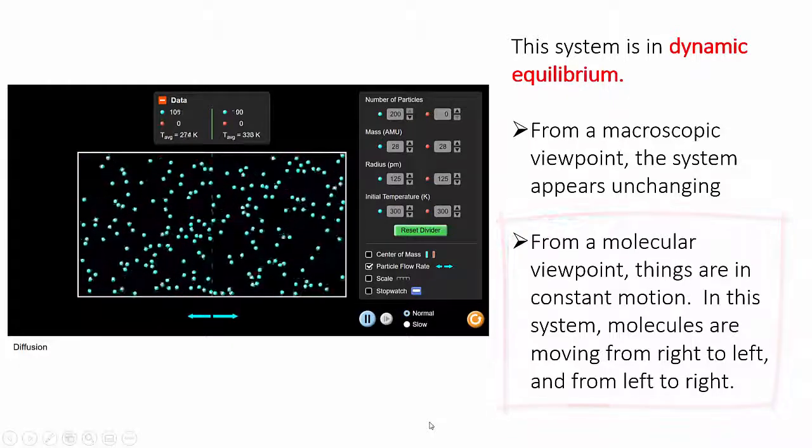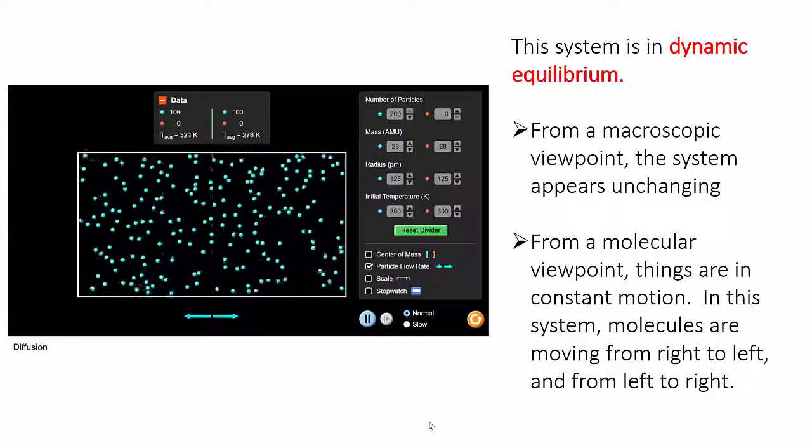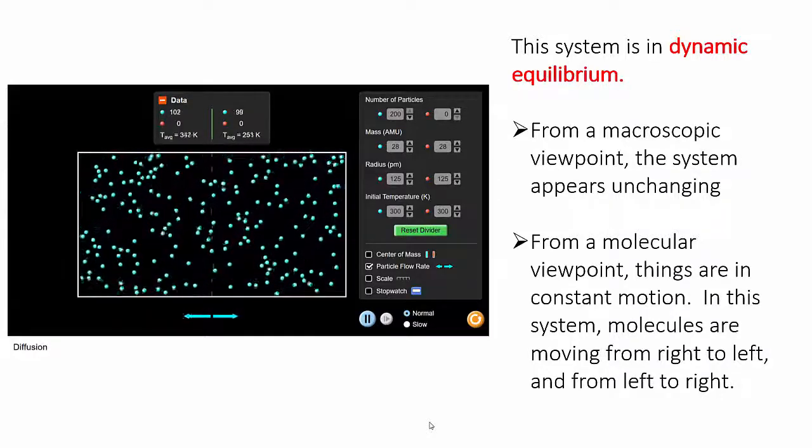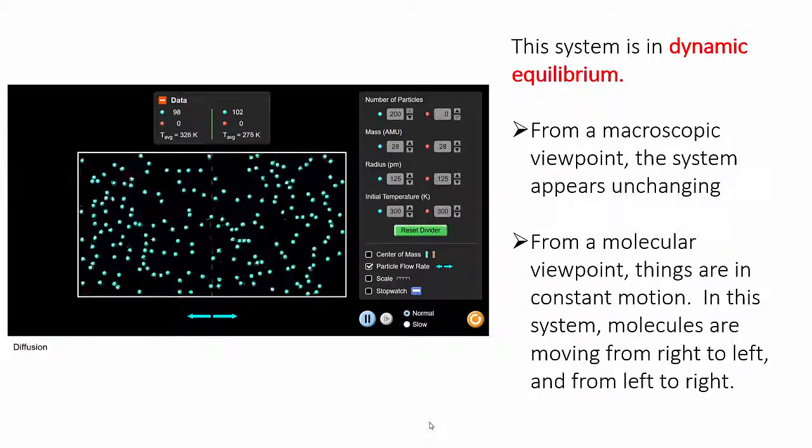This example is a simple physical system. No chemical reaction is occurring. It's merely gas atoms bumping around in a container. But the idea of dynamic equilibrium can also be applied to chemical reactions.